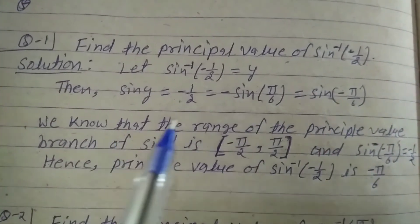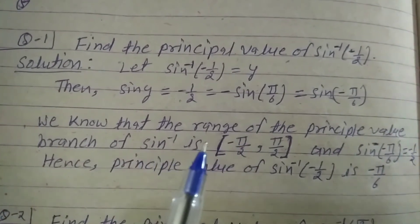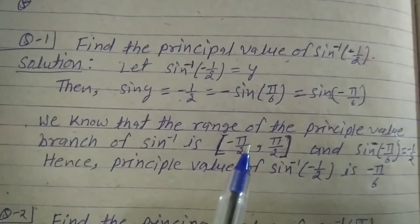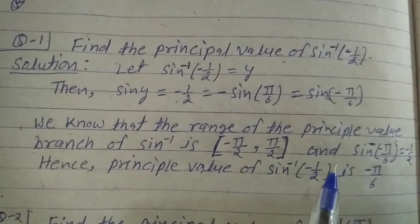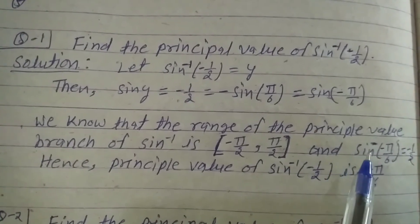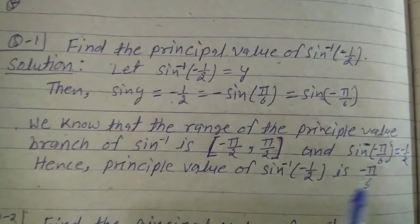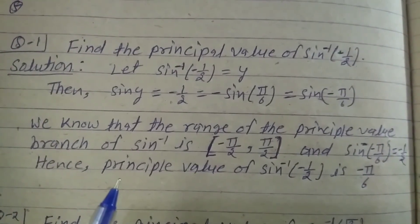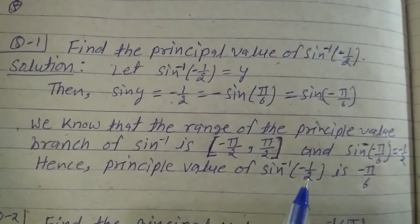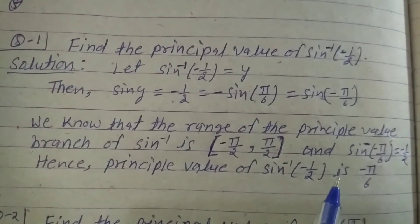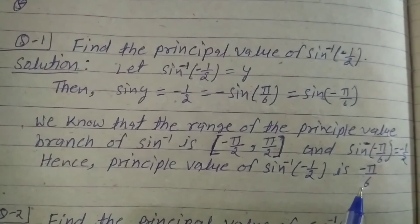We know that the range of the principal value branch of sine inverse is the closed interval of minus pi by 2 to pi by 2. And sine of minus pi by 6 is equal to minus 1 by 2. Hence, the principal value of sine inverse of minus 1 by 2 is minus pi by 6.